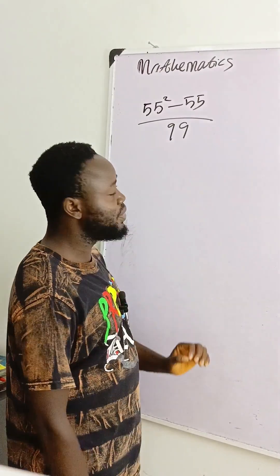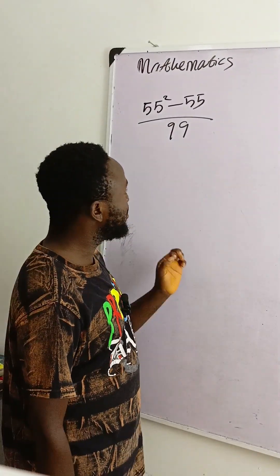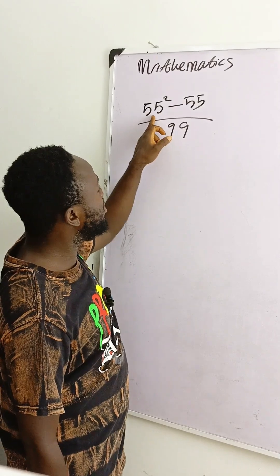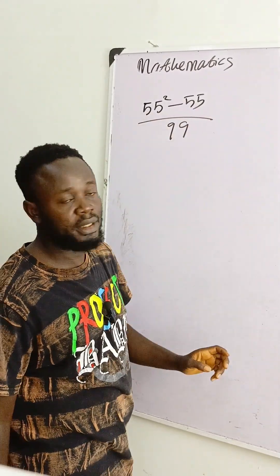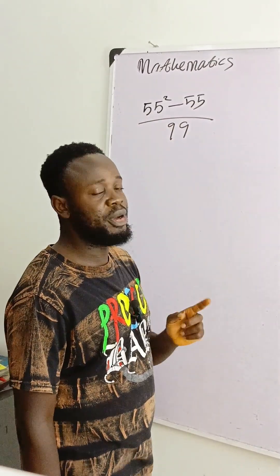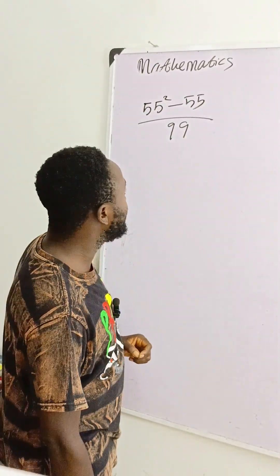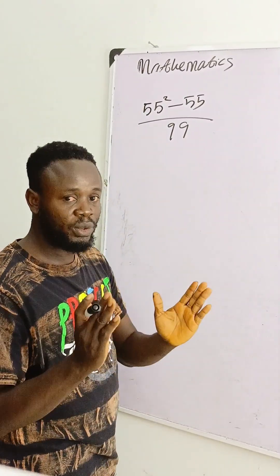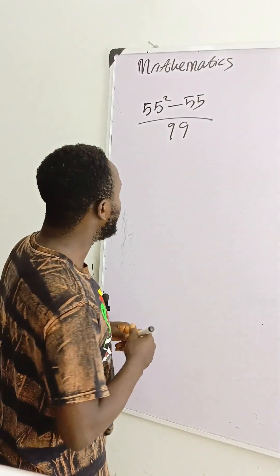You are required to solve this without using a calculator. So if you see something like 55 squared minus something divided by 99, you may not finish doing it before the exam ends. So what you do is factorize and simplify it in a way that will be easier for you.